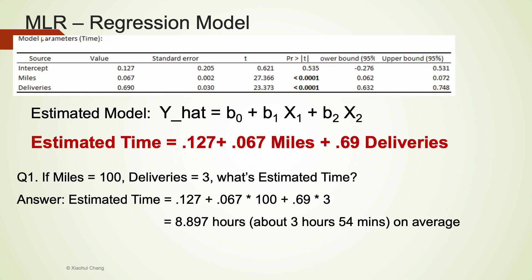There are several questions we can be asked that are related to the estimated equation. Question 1: If miles is 100, deliveries is 3, what's the estimated time? All we need to do is plug all those numbers into the estimated equation and calculate the estimated time to be 8.897 hours on average. That's about 8 hours and 54 minutes.